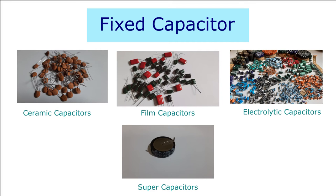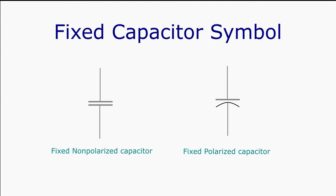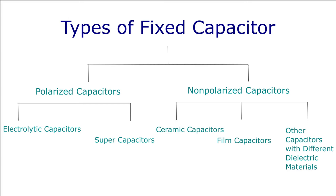A fixed capacitor has a definite capacitance value that cannot be changed. The value of the capacitor is fixed during the manufacturing process. The schematic symbol for a fixed capacitor is given. Fixed capacitors are divided into polarized capacitors and non-polarized capacitors. Polarized capacitors are further divided into electrolytic capacitors and supercapacitors. Non-polarized capacitors are divided into ceramic capacitors, film capacitors, and other capacitors with different dielectric materials.